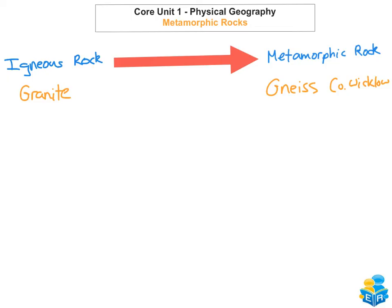This type of rock is most likely formed at destructive plate boundaries. Another example of an igneous rock changing to metamorphic would be basalt, which is an extrusive igneous rock. Basalt changes to schist when it's metamorphicized, and schist rock can be found in Wicklow as well — Glendalough is a common area.